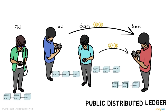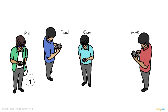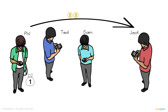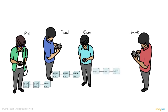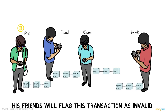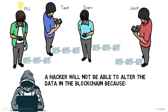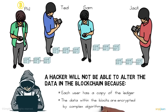This chain of records, or blocks, is called a ledger, and this ledger is shared among all the friends, acting as a public distributed ledger — this forms the basis of blockchain. So what happens when Phil has only one bitcoin left and tries to send two more to Jack? The transaction will not go through, because all his friends have copies of the ledger and it's clear Phil only has one bitcoin. His friends will flag this transaction as invalid, and a hacker will not be able to alter the data.